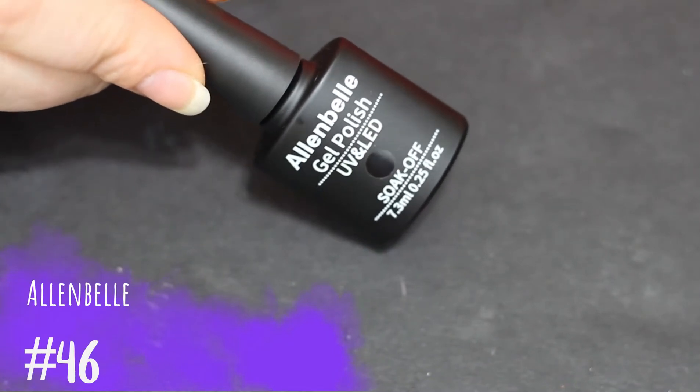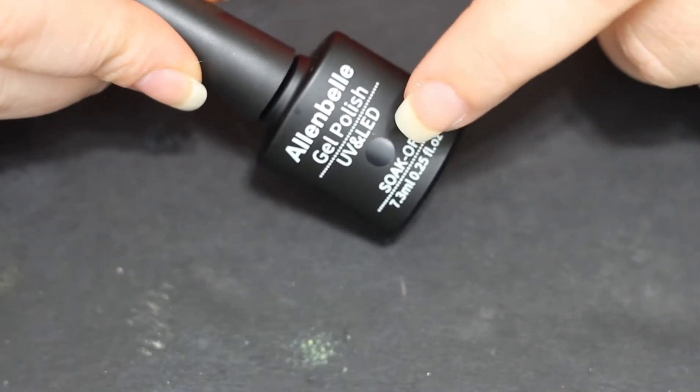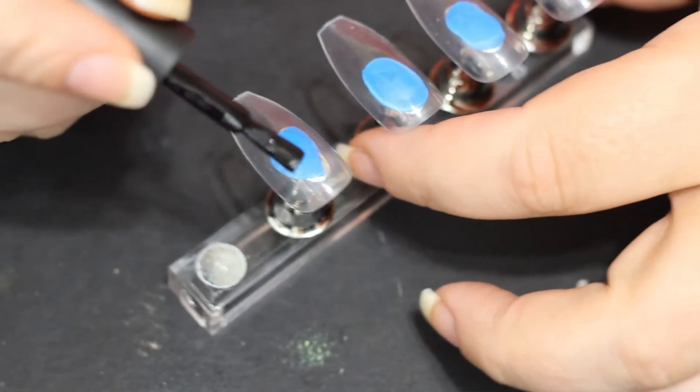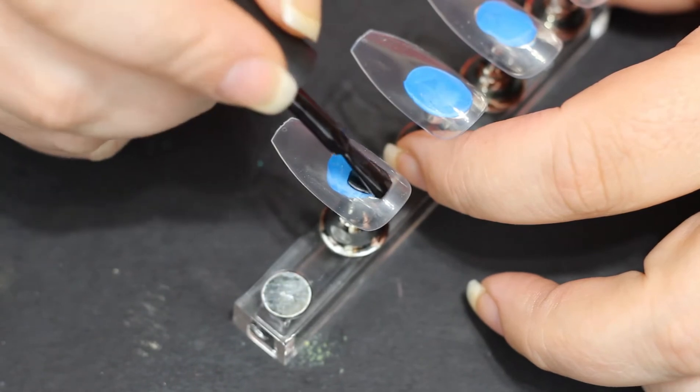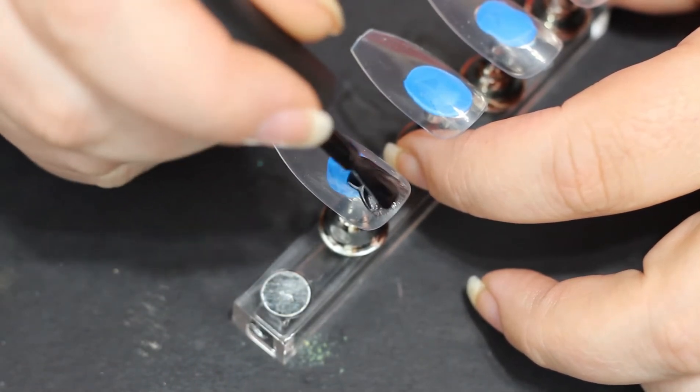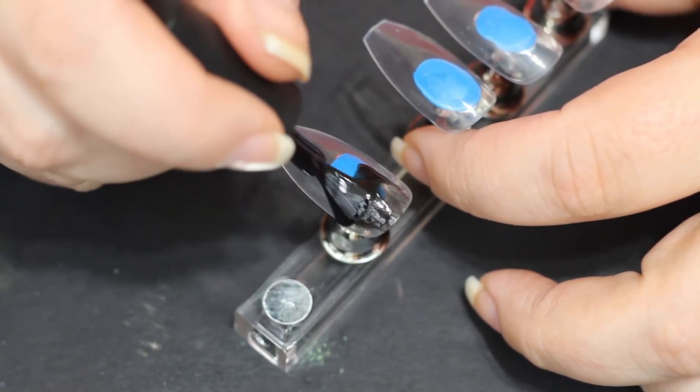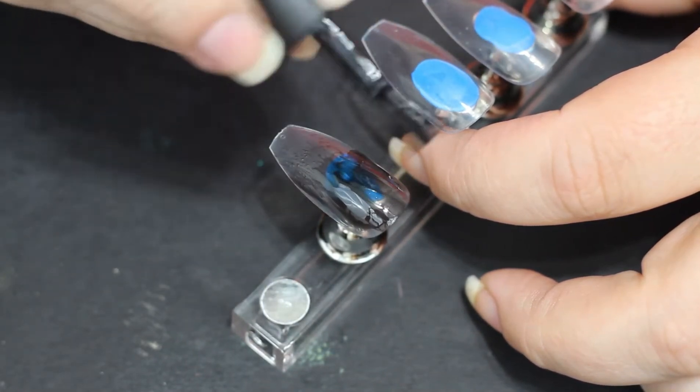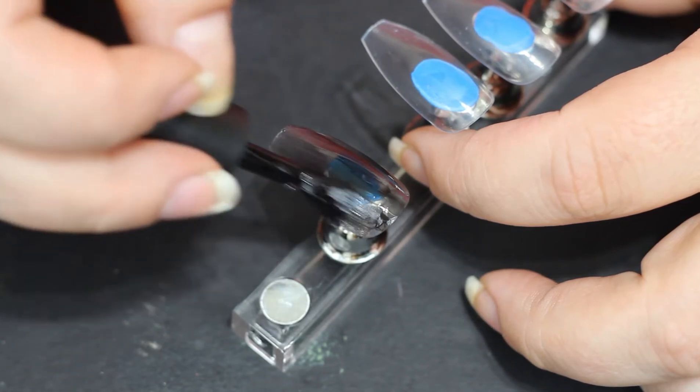My poor nails, they needed a good trim. I finally had the last of that damage coming off. So I bought these polishes, they're the Allen Bell gel polishes. They were on Amazon. I am going to put a link to Amazon below for these—that is an affiliate link.